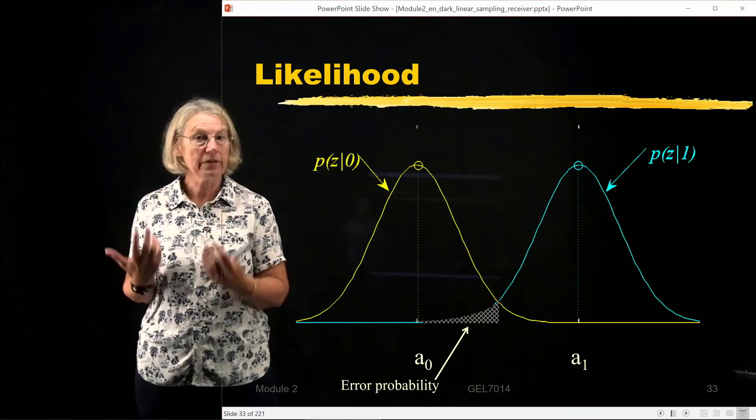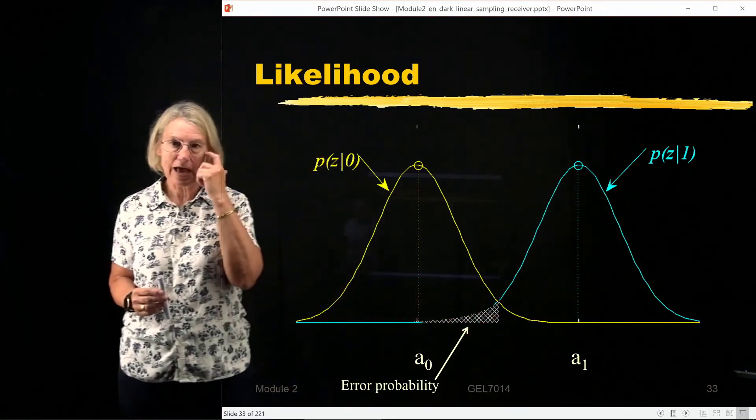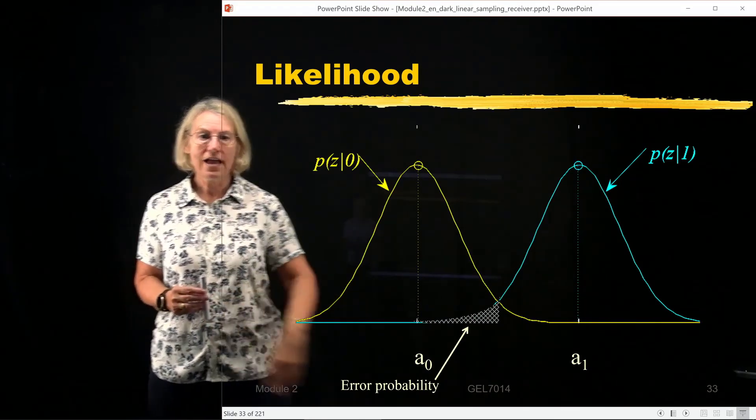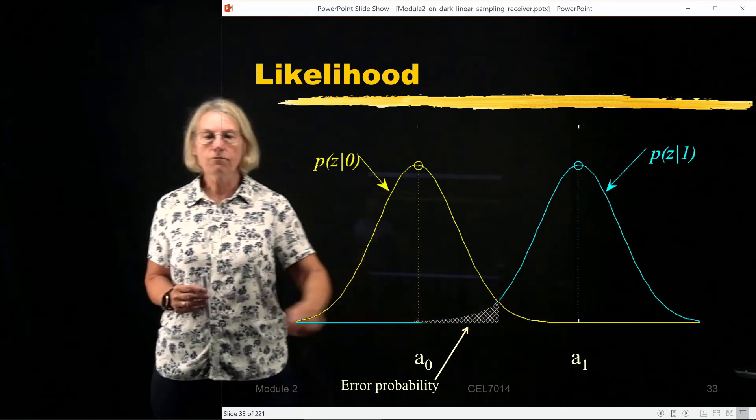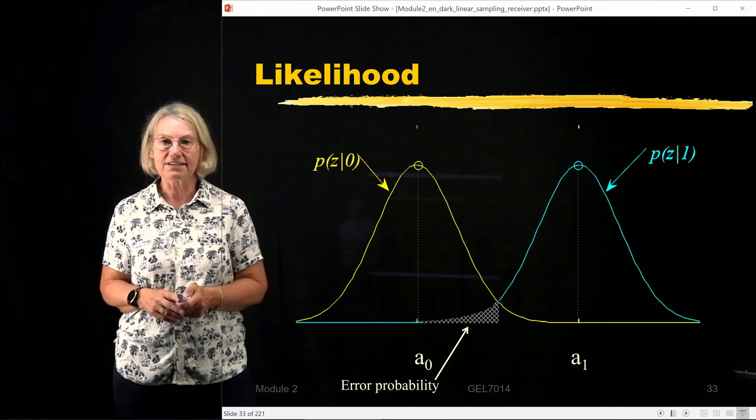And so now we're going to say, how good is our receiver? And the way we're going to determine how good is our receiver, we're going to say, what is the probability of error of our receiver? And this is going to be the means for us to calculate this probability of error, is we're taking the integral over an interval of the conditional probability density function.